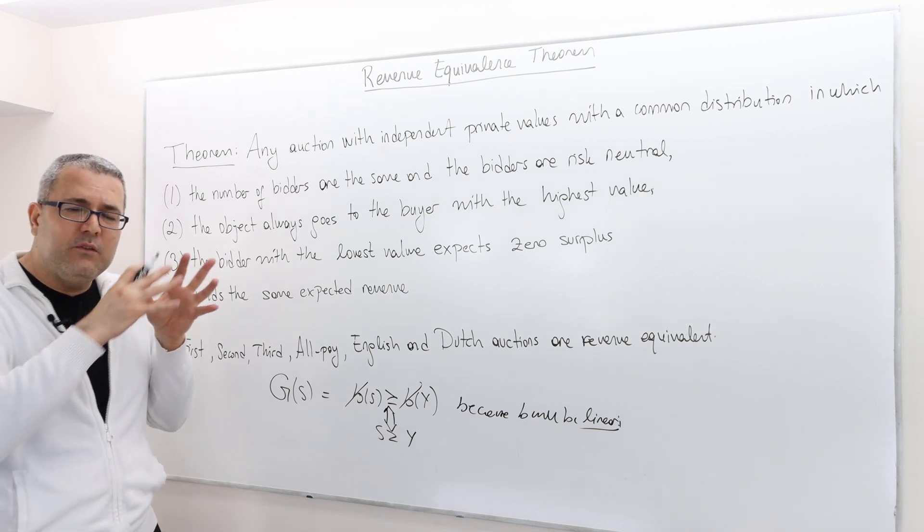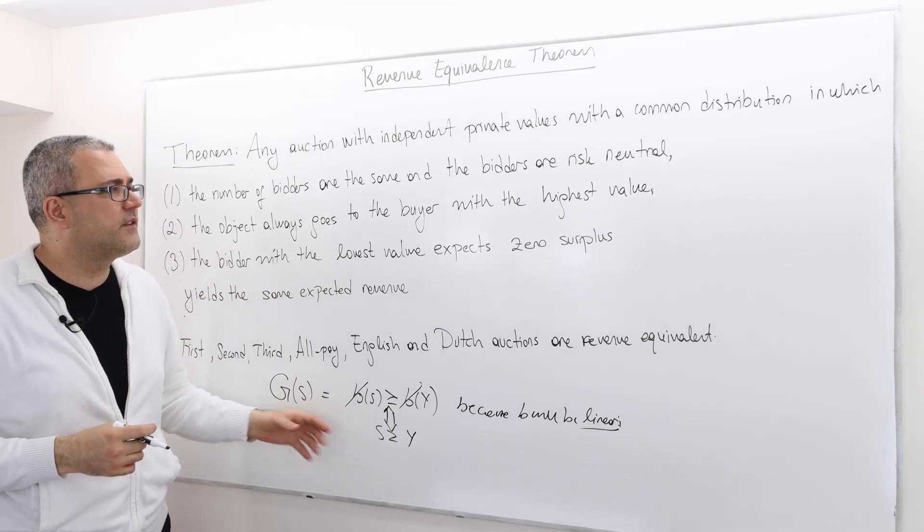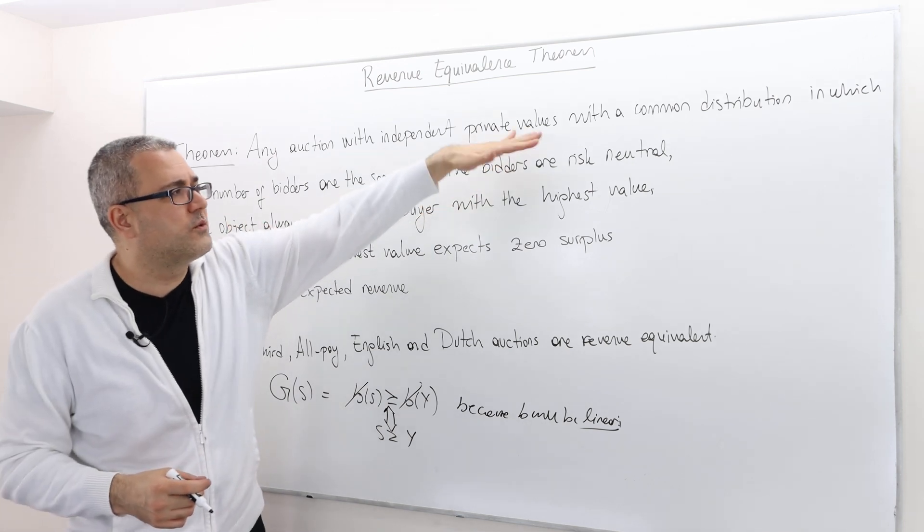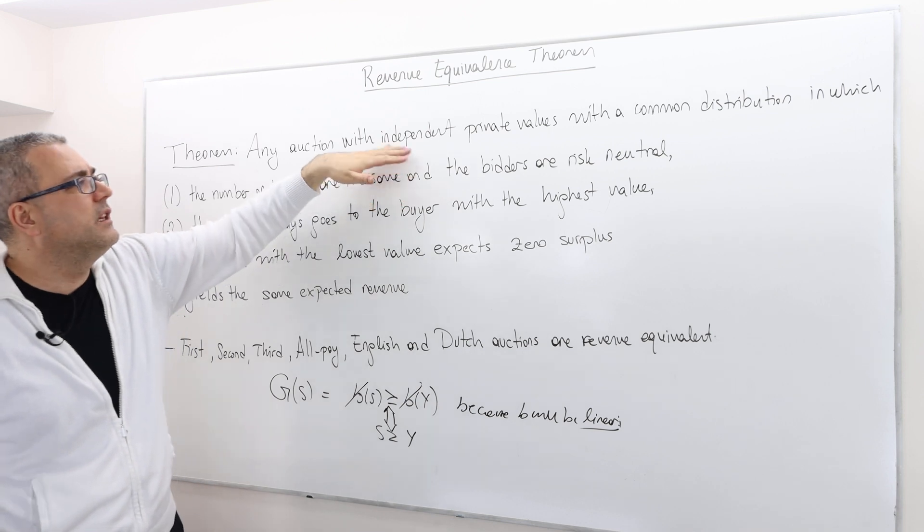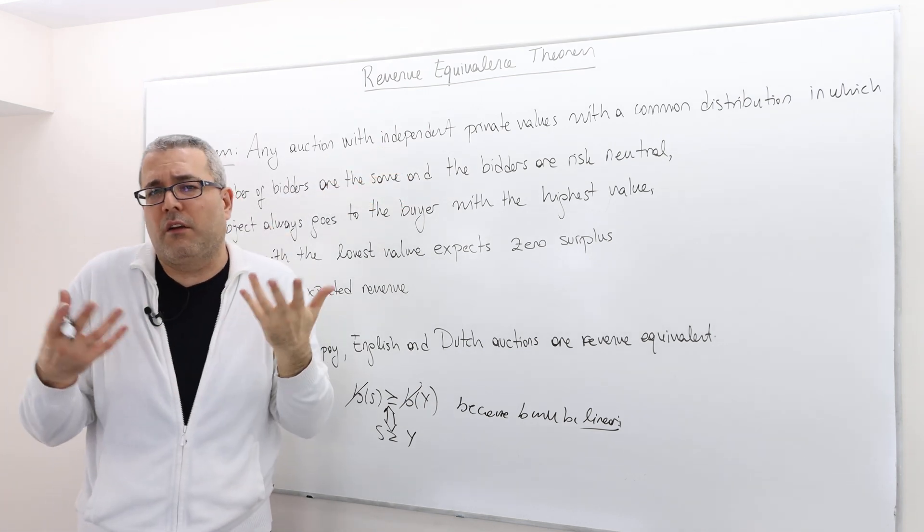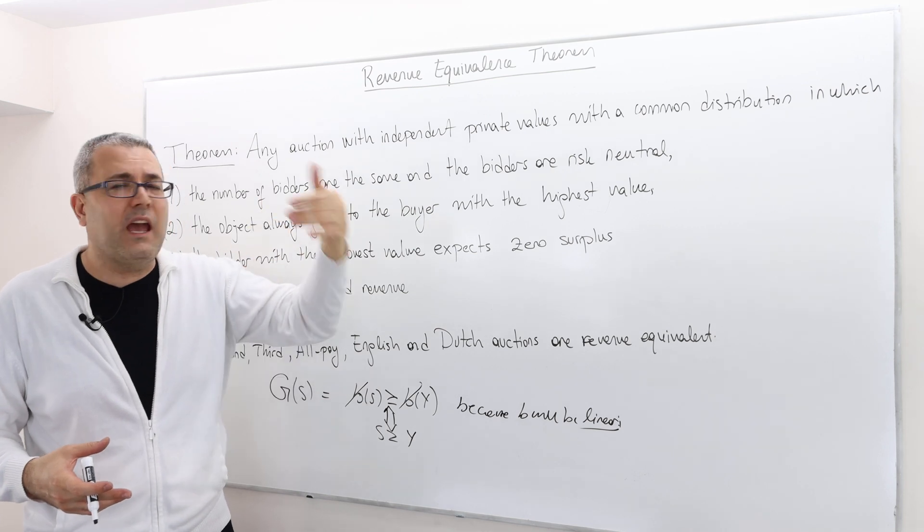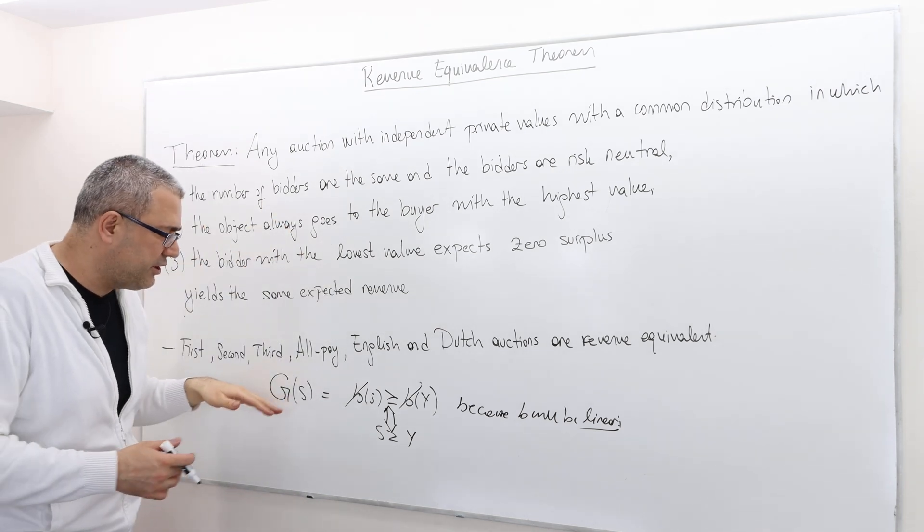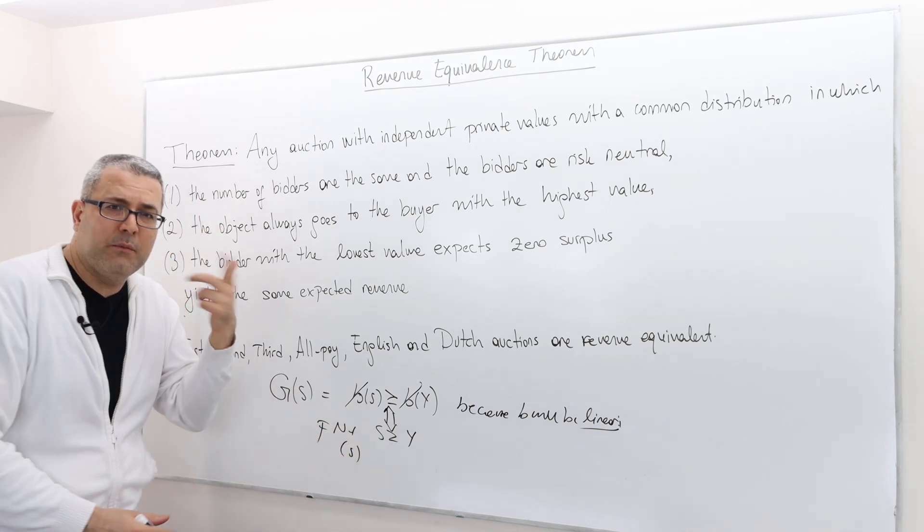I think you can sort of feel how we can prove this thanks to all those assumptions. Clearly the common distribution, independent private values are important because thanks to independent private values and common distributions, we can calculate G as F to the power N minus 1 S.